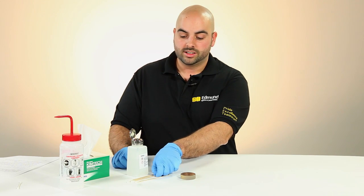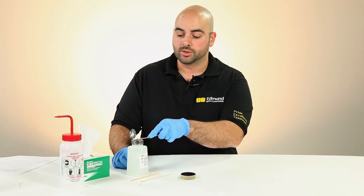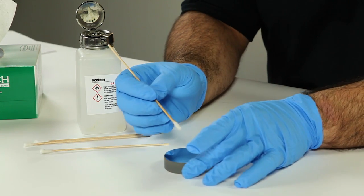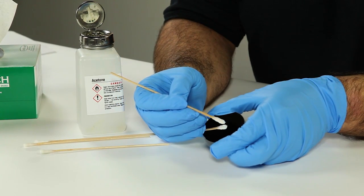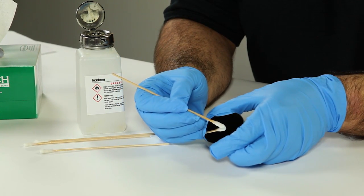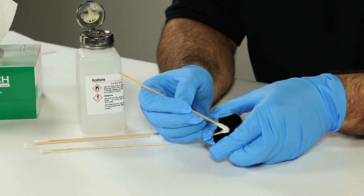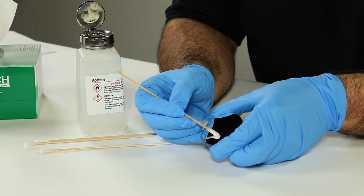Instead, lightly saturate the tip of the cotton swab with acetone or alcohol. Then, delicately rub the surface of the optical component, moving in small circular motions that start in the center and work toward the edges. The circular motion reduces streaks, which are commonly caused by vertical strokes.